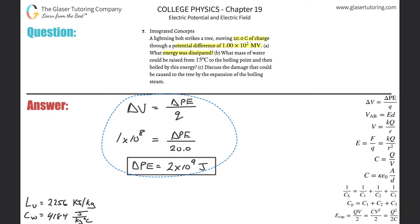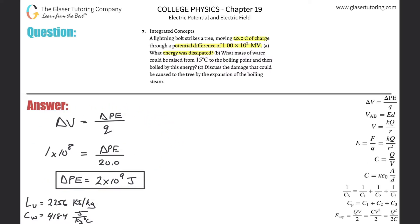Okay, great. If only all problems were like that, right? So this was for letter A. Alright, let's take a look at letter B: What mass of water could be raised from 15 degrees Celsius to the boiling point and then boiled by this energy?